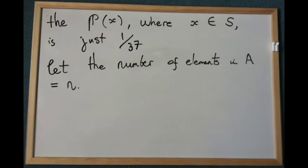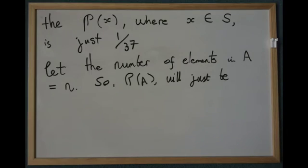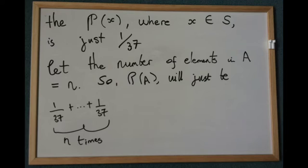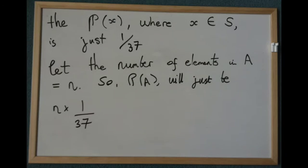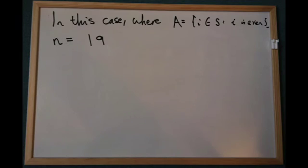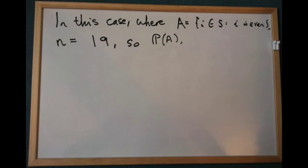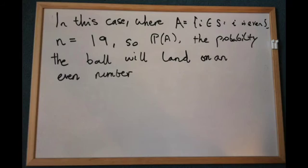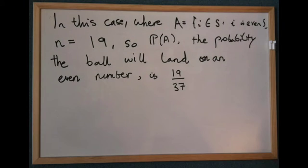Let the number of elements in A equal N. So the probability of A will just be the probability of the first element of A occurring plus the probability of the second element of A occurring, all the way up to the probability of the Nth element of A occurring, which is simply N times 1 over 37. In this case, where A is the set of even elements of S, N equals 19, so the probability of A occurring is 19 over 37.